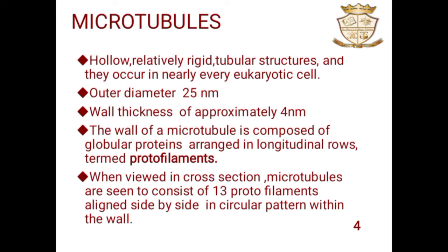Next, microtubules. Actin and tubulin are small monomer bead-like structures, and the beads are connected to form a polymer called filaments. Microtubules are hollow and relatively rigid tubular structures. They are thick in structure and are seen in all eukaryotic cells. The outer diameter is 25 nanometers and wall thickness is approximately 4 nanometers. The wall of a microtubule is composed of globular proteins arranged in longitudinal rows termed protofilaments.